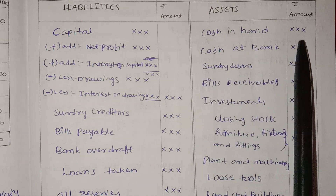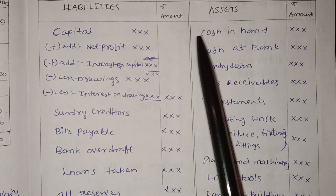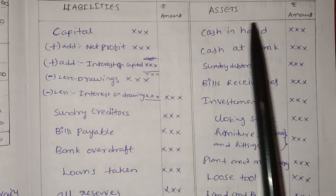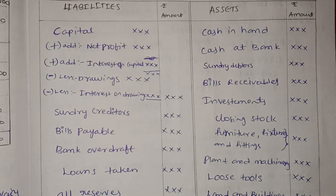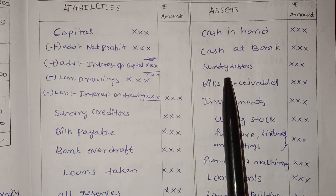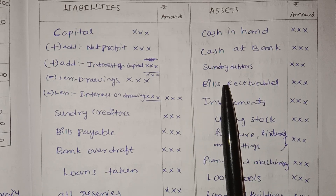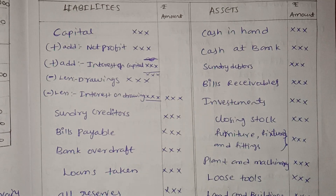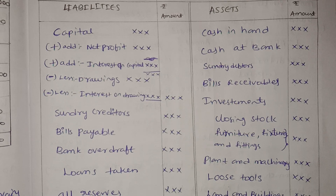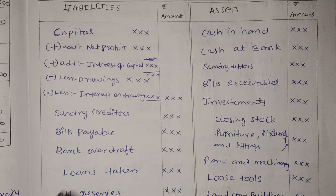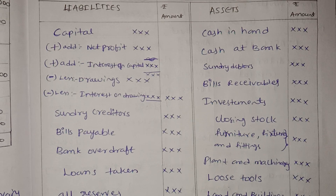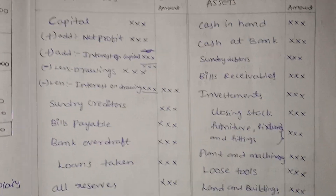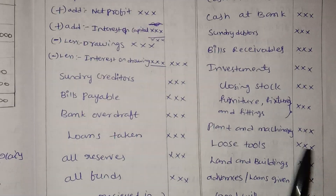Assets are current assets: cash in hand, cash at bank. Debtors are current assets — whenever you are selling goods on a credit basis, those buyers are called debtors. We sell products on credit basis and those parties are debtors. Investment is also a current asset.